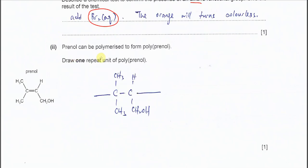Part two, the prenol can be polymerized to form polyprenol. Draw one repeat unit. This is prenol, very easy, just remove the pi bond, add tails, so you get this.